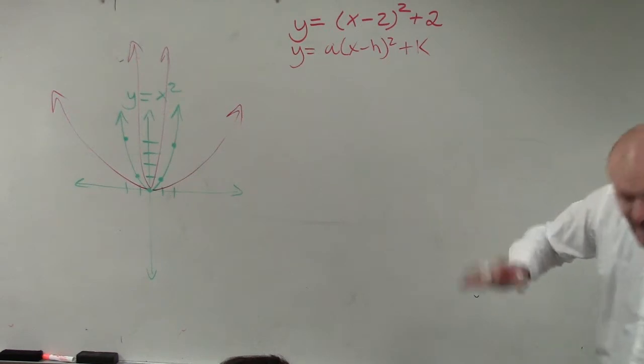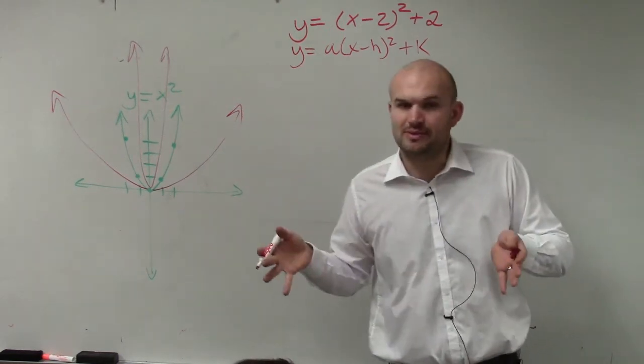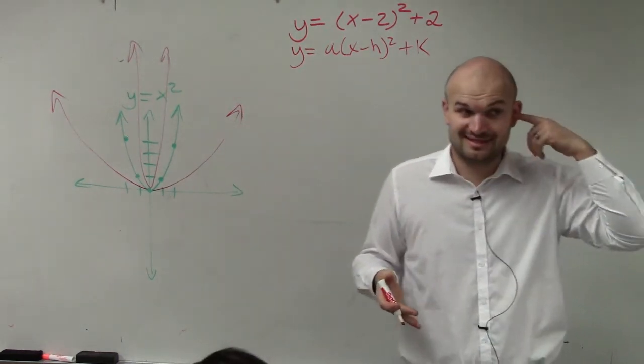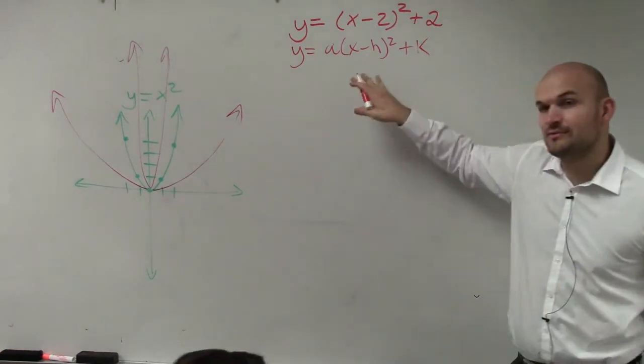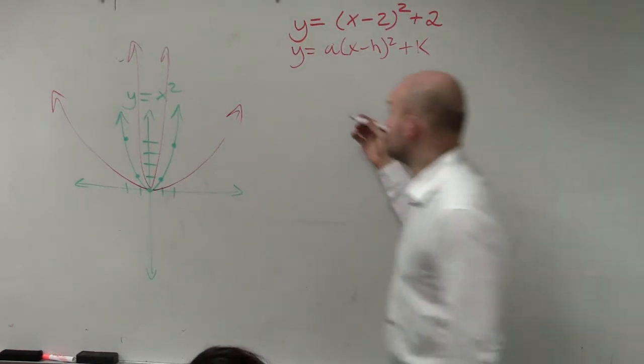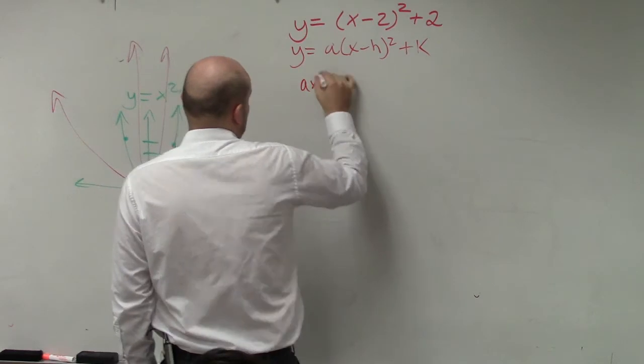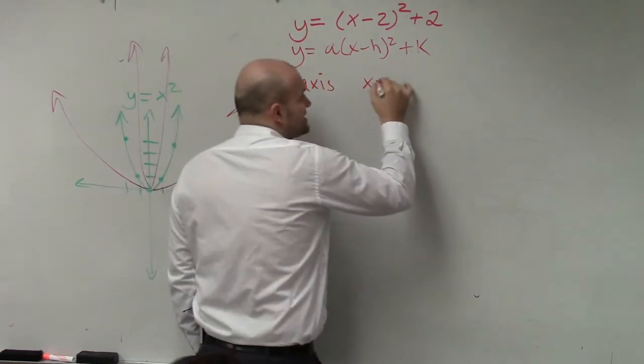Now remember, our h and our k told us what our horizontal and vertical transformations are. Pretty helpful, I guess. So first thing we want to do is identify the axis symmetry. Axis symmetry is x equals h.